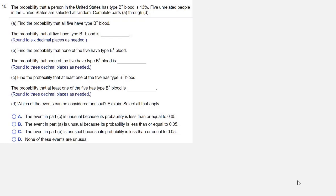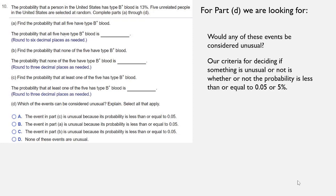Now in part D, we're being asked, are any of these unusual? So our criteria for deciding if something is unusual or not is whether or not the probability is less than or equal to 0.05, which is 5%. When we look at all three of these probabilities,